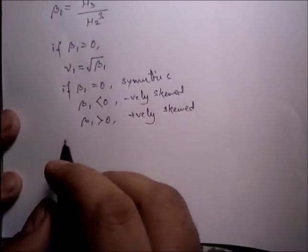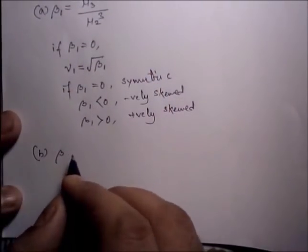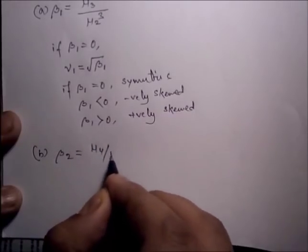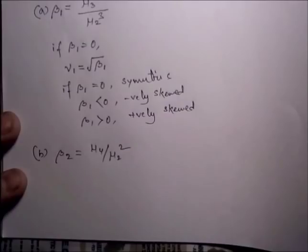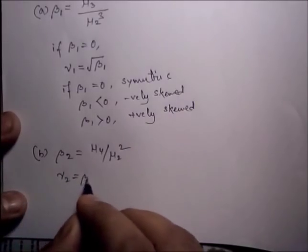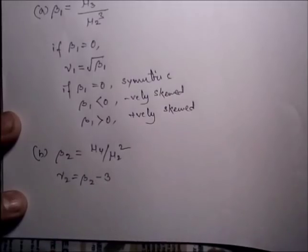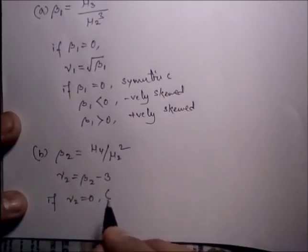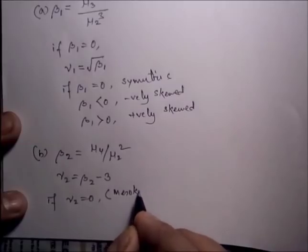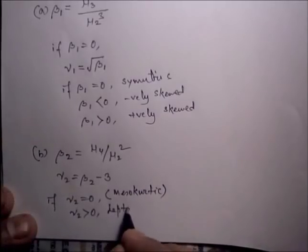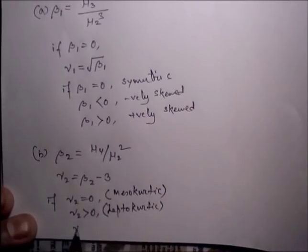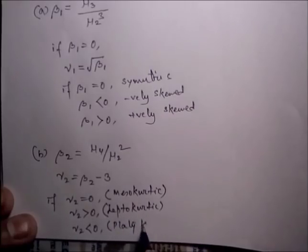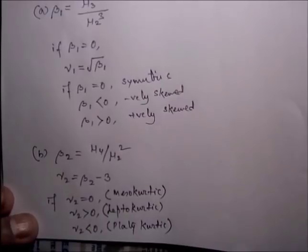Beta_2 is the second moment ratio and is nothing but mu_4 divided by mu_2 squared — it is a measure of kurtosis. Gamma_2 is beta_2 minus 3. If gamma_2 equals 0, it is mesokurtic. If gamma_2 is less than 0, it is platykurtic.